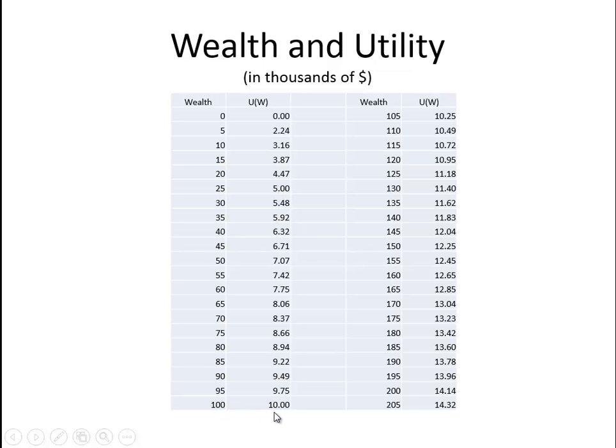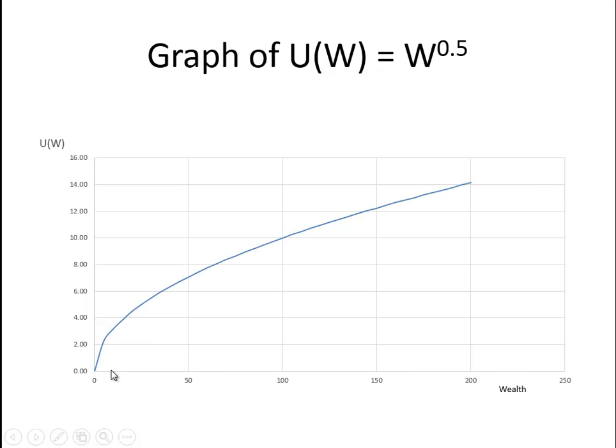The square root of 100 is 10, the square root of 25 is 5. That's all we're computing. This is the utility you receive for each level of wealth. If you want to graph that, you get this utility function. That's where the utility function comes from.